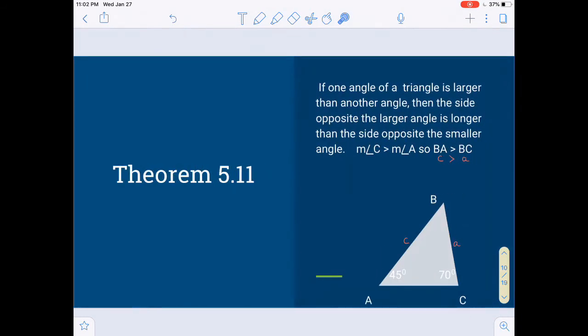Theorem 5.11 is very much like it, only this time you're starting with the angles. So if one angle of a triangle is larger than another angle, then the side opposite the larger angle is longer than the side opposite the smaller angle. So here you can see that the measure of angle C, 70 degrees, is bigger than A at only 45 degrees. So you don't know what the sides actually are, but you do know that c is going to be greater than a.